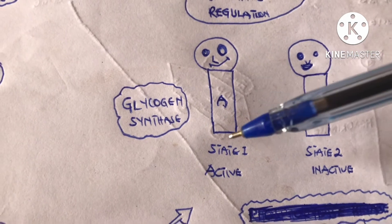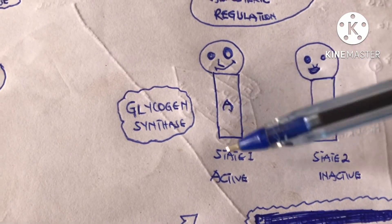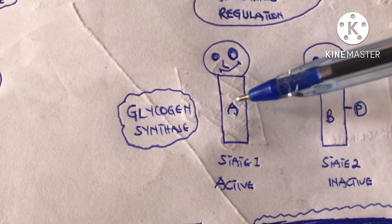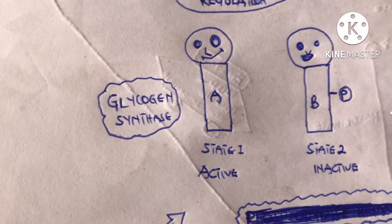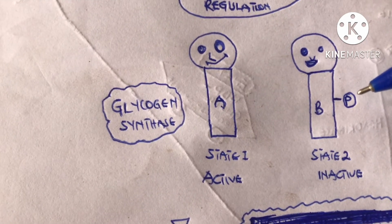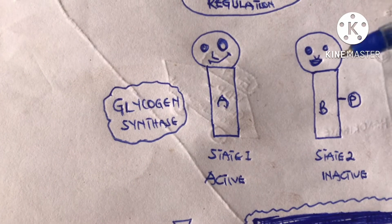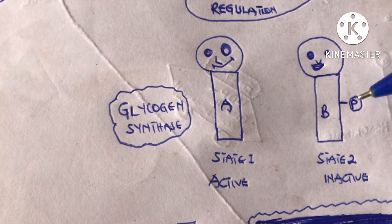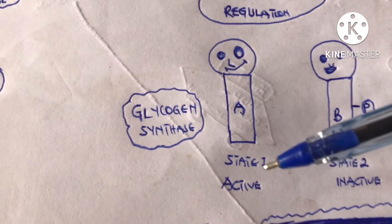The A form of glycogen synthase is the active form — there is no phosphate attached to it. The B form is the inactive form — a phosphate is bound to it. Whenever glycogen synthase has a phosphate attached, it becomes inactive, in the B form. When the phosphate is removed, it converts back to the A form, the active form.